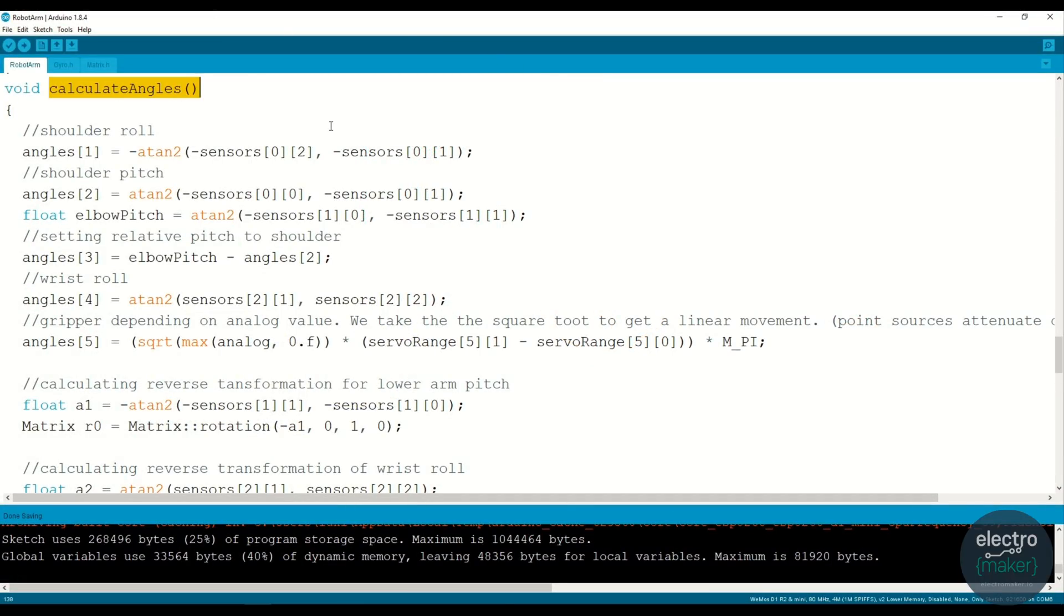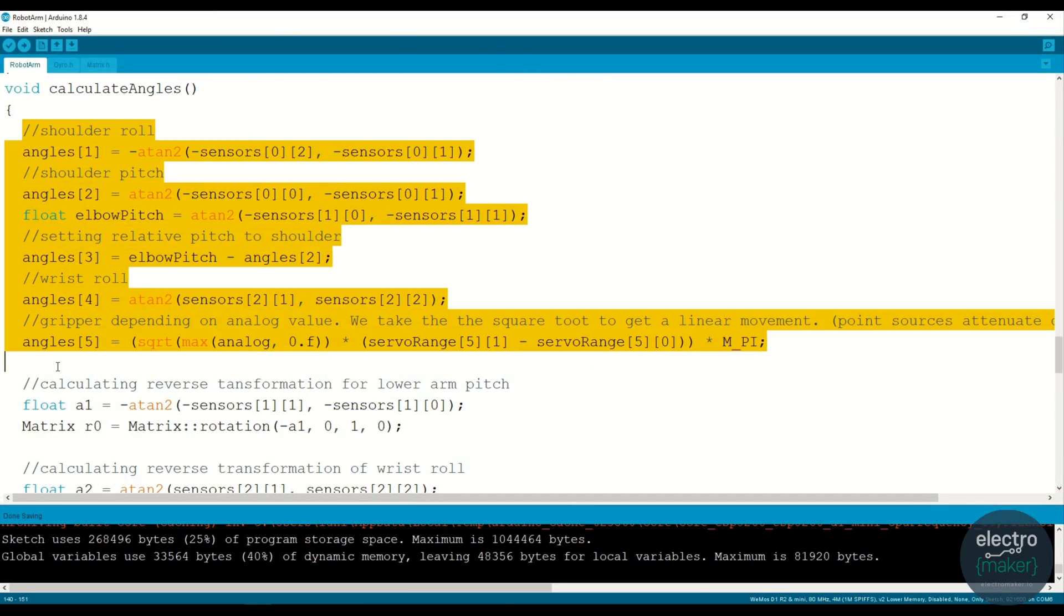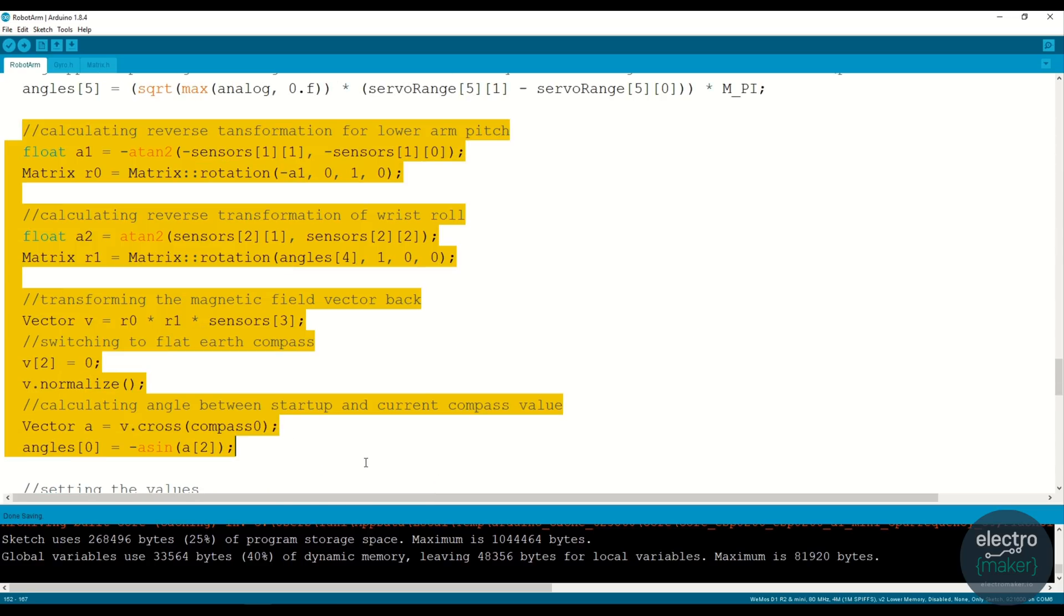In the function calculate angles of the code all angles are calculated and the transformations are done using some matrix multiplications.